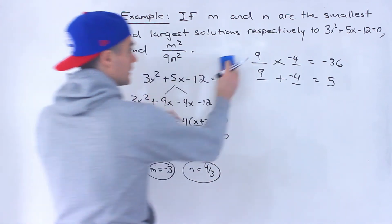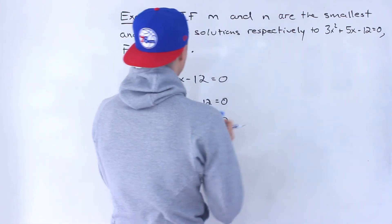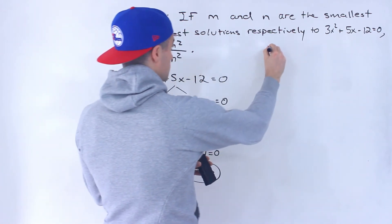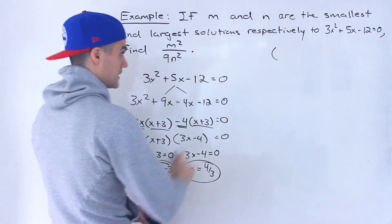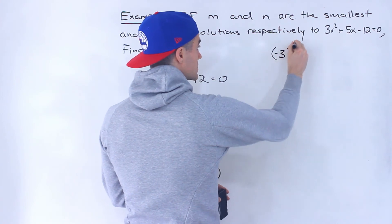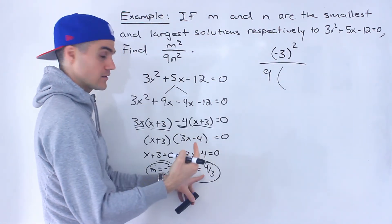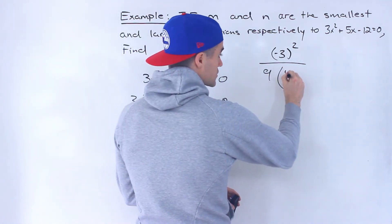Now we got to take these and plug it in here. So we'd have m squared over 9 n squared. So we have m squared, which would be negative 3 squared over 9 times n squared, which would be 4 over 3 squared.